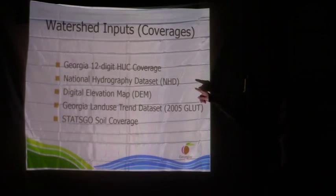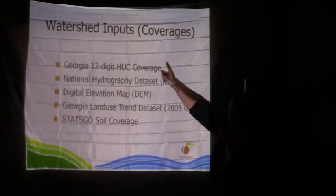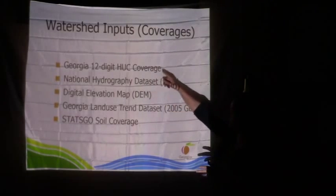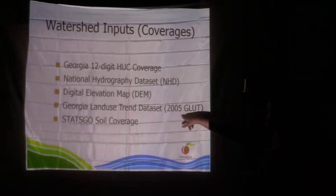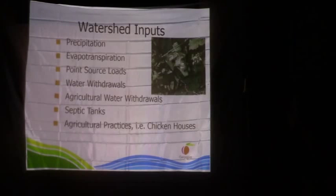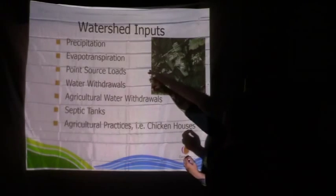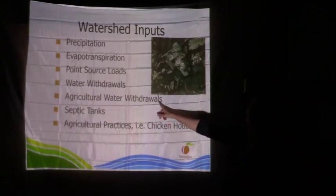Data needed by those watershed models: hydrography; basins broken into 12-digit HUCs; DEM (digital elevation model) for slope — water flows to lower elevation; 2005 land use; soils (a finer soil dataset is now available); precipitation; evapotranspiration; point source loads; and water withdrawals including agricultural water withdrawals.